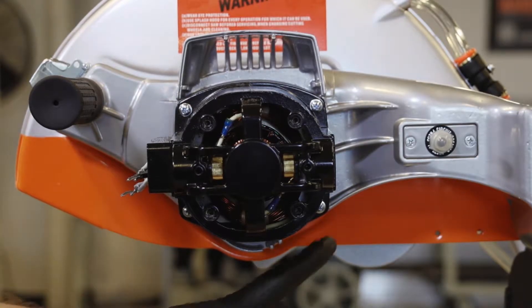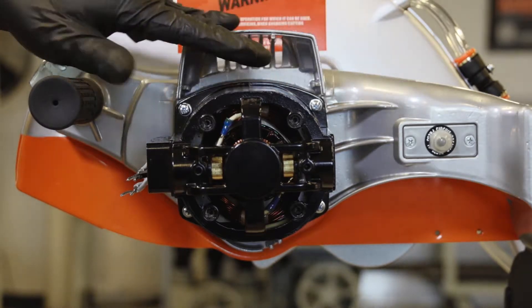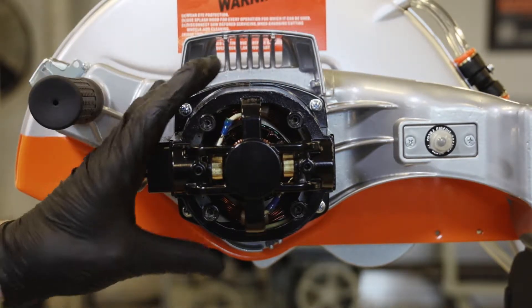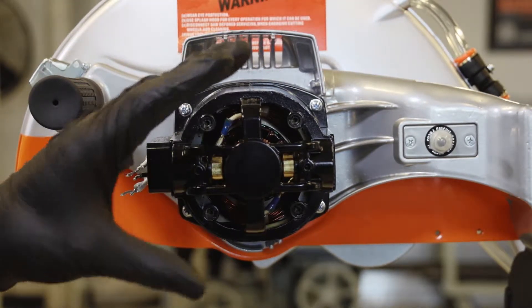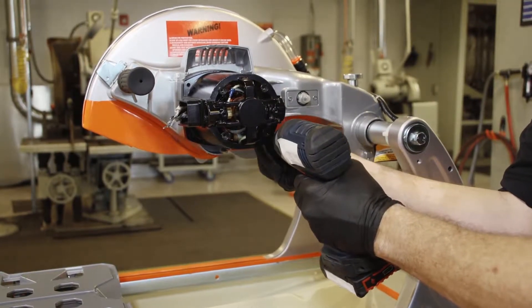Remove the four screws that hold the motor field windings in place and then slide the field windings off the armature.